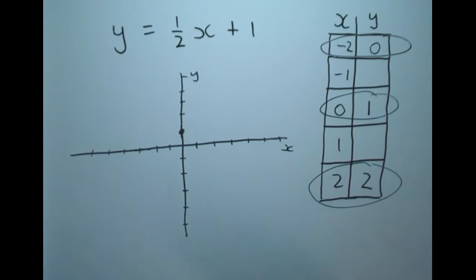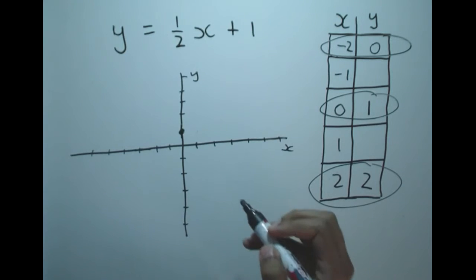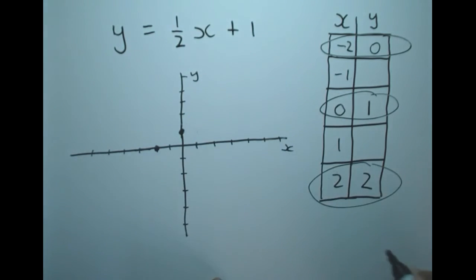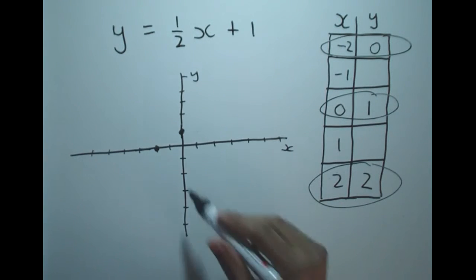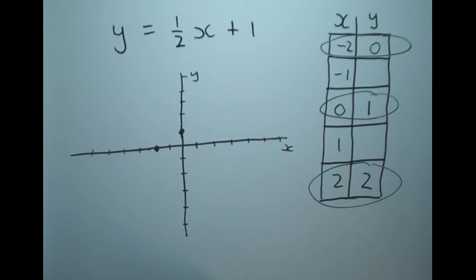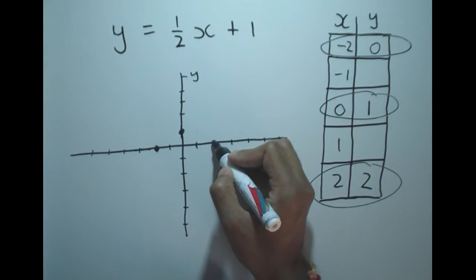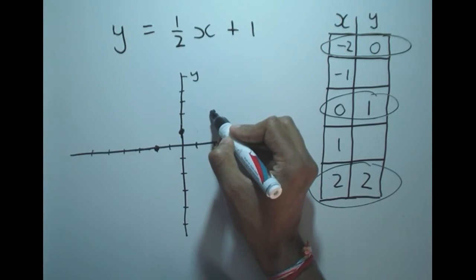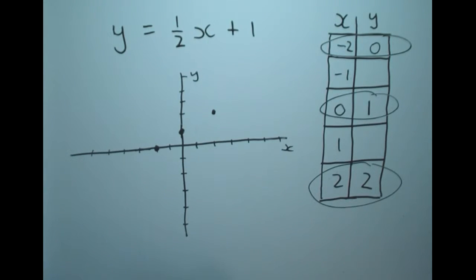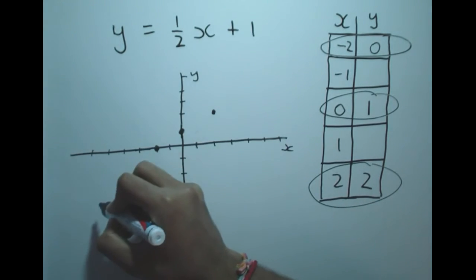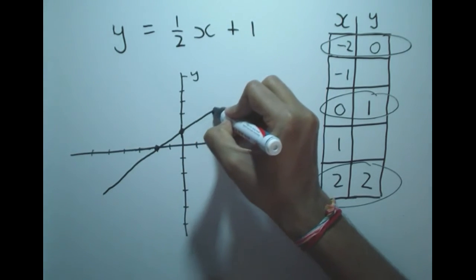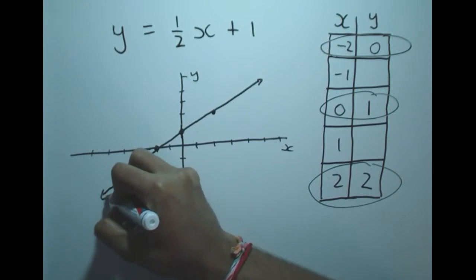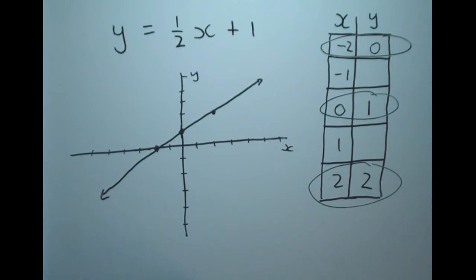Now I'll plot those points on the Cartesian plane and join the dots to get the line. x = -2, y = 0 goes here. The point (0, 1) is already on the graph, and x = 2, y = 2 goes over here. I have three points and I'll connect them with a ruler to get my straight line graph for y = ½x + 1.